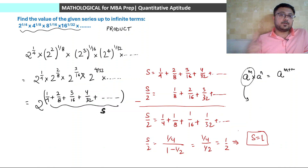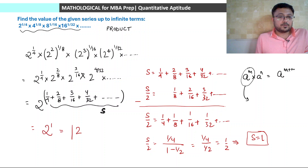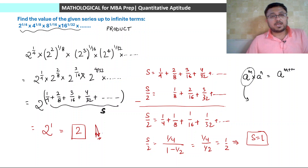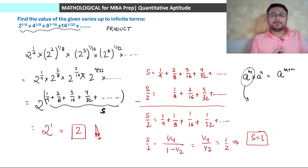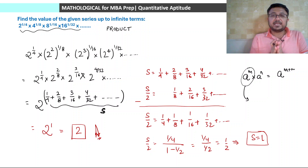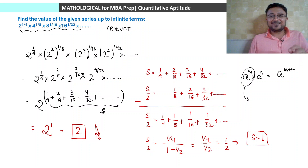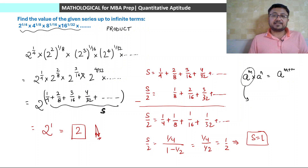Since S = 1, the original product equals 2^1 = 2. The answer to this infinite product series is 2. This was an interesting application of AGP — the series appeared as a product but was converted using logarithmic/power rules into a standard AGP sum problem.